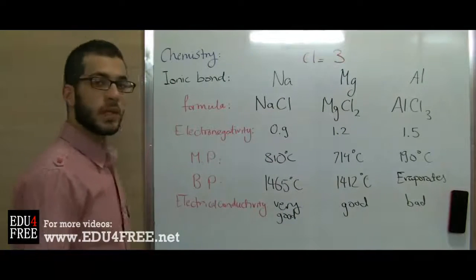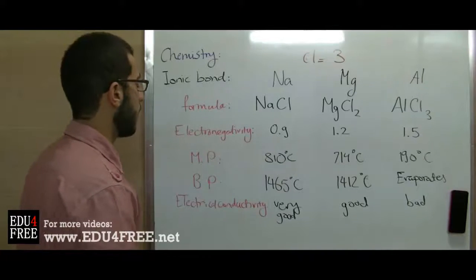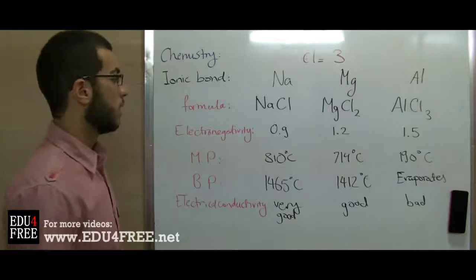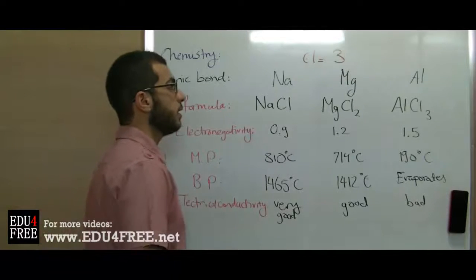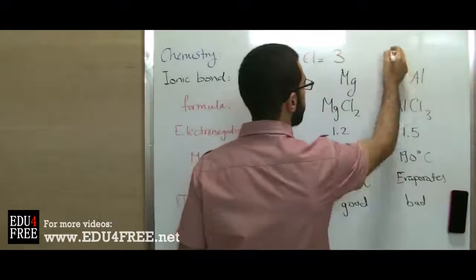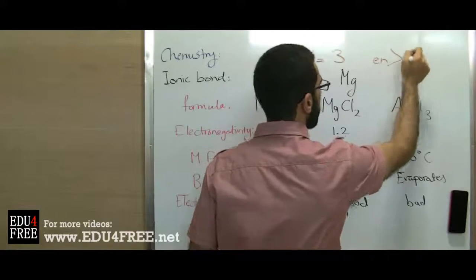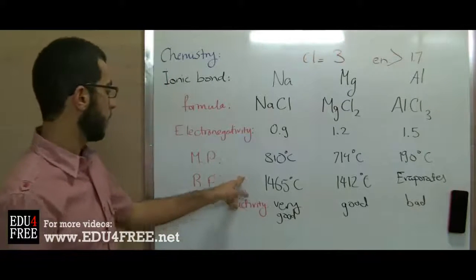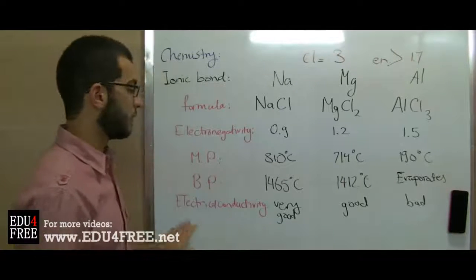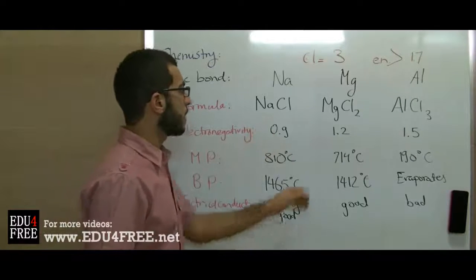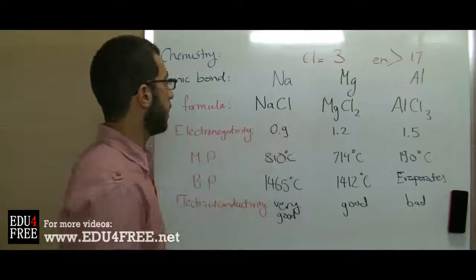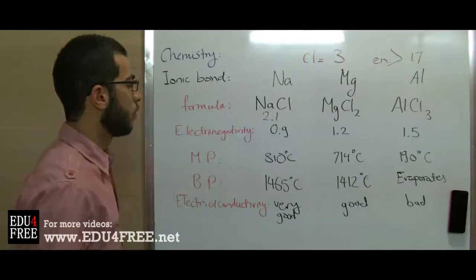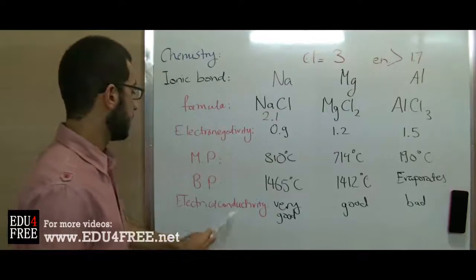The electronegativity difference of a compound determines whether it is ionic or covalent. If the electronegativity difference is more than 1.7, we can say the compound is ionic, and its properties include high boiling point, high melting point, and good conductivity of electricity. For sodium chloride, the difference is 3.0 minus 0.9, which gives 2.1 — higher than 1.7. That's why sodium chloride conducts electricity well and has high boiling and melting points.